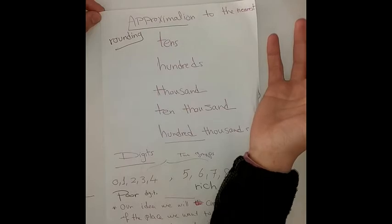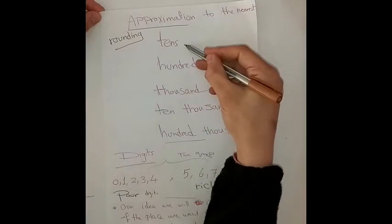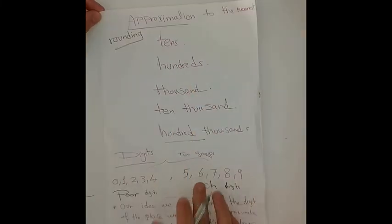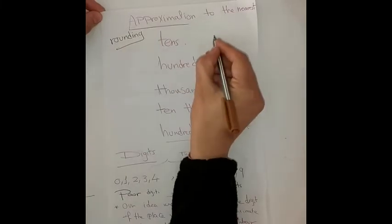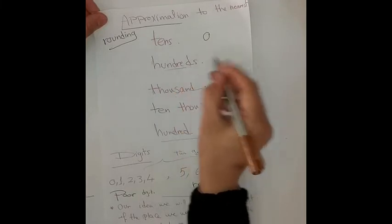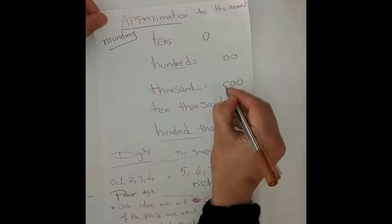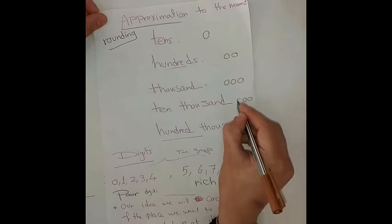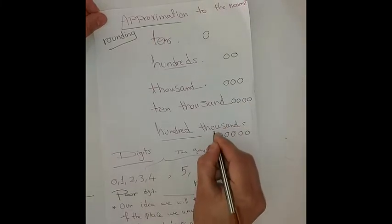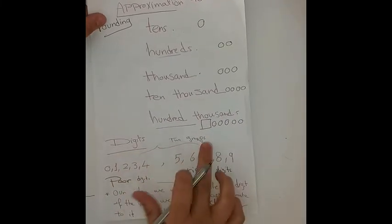What is the meaning of approximation? Approximation means rounding to the nearest number — to the nearest tens, hundred, thousand, and so on. When we approximate to the nearest tens, we add zero and approximate the next digit. To the nearest hundreds, we put two zeros; thousands, three zeros; ten thousand, four zeros; hundred thousand, five zeros — and look to the digit beside them. We divide our digits into groups.